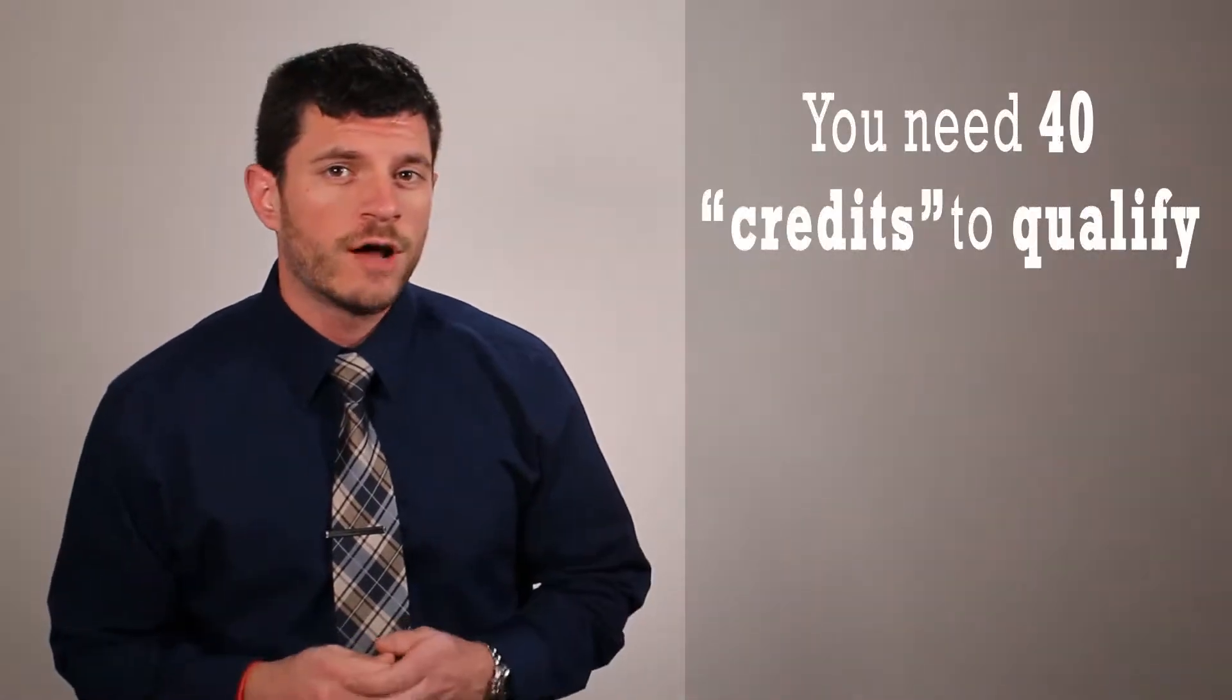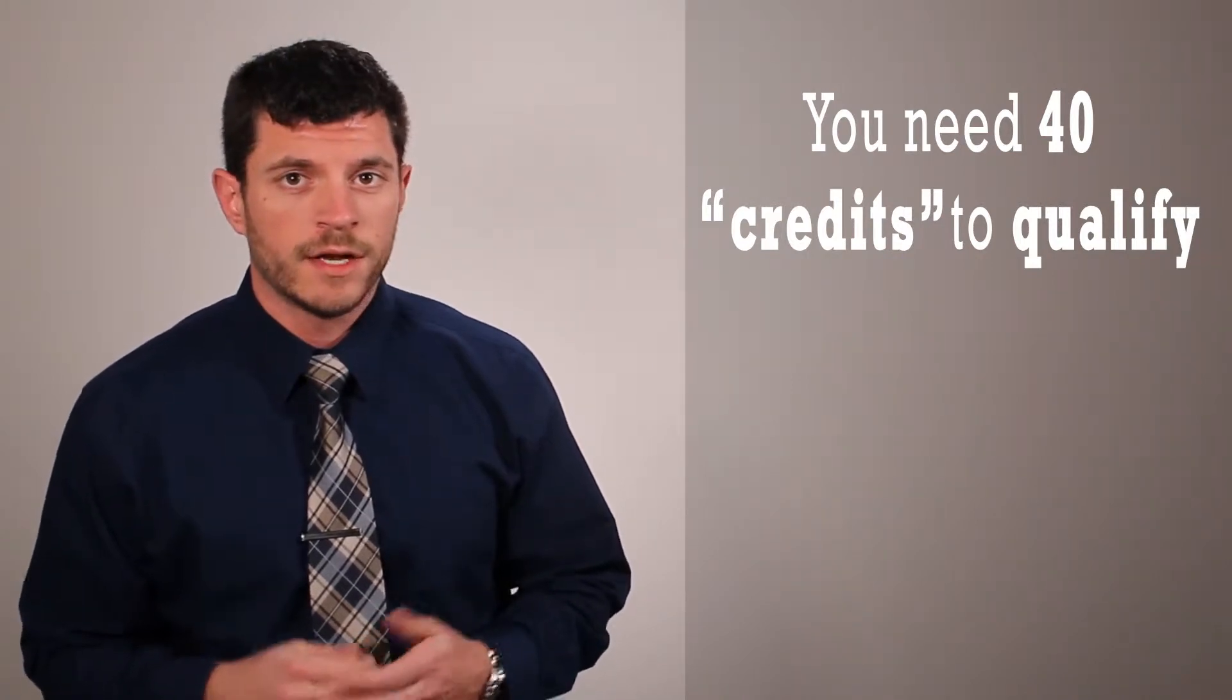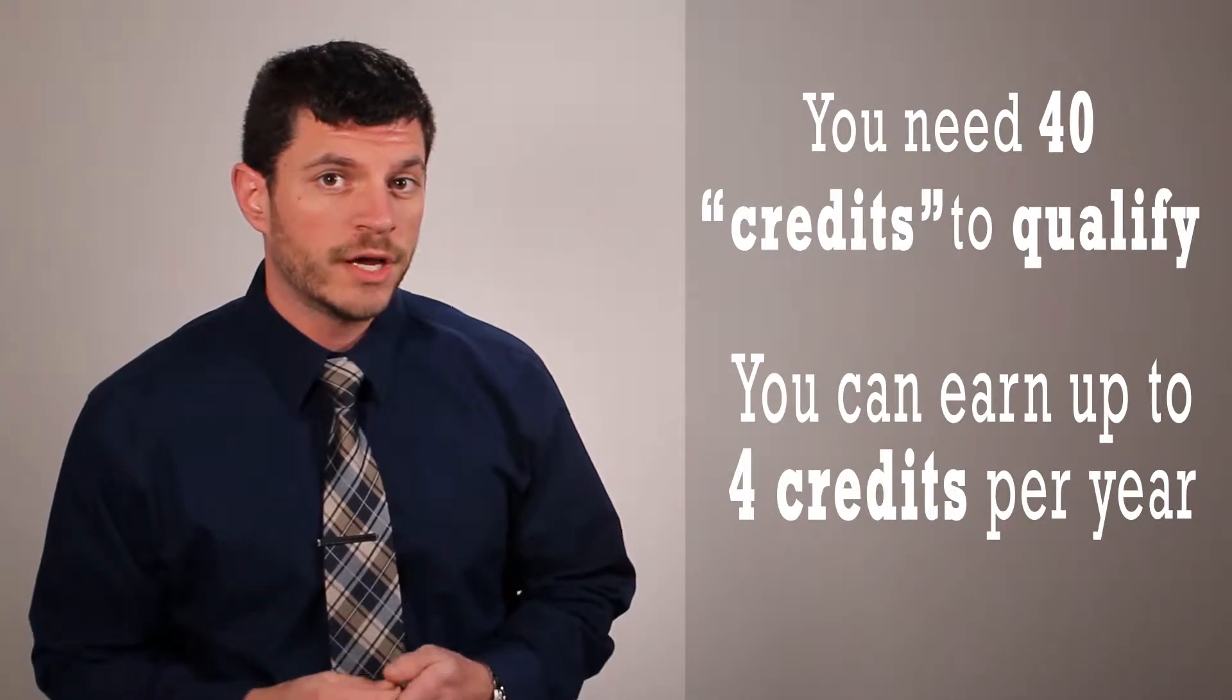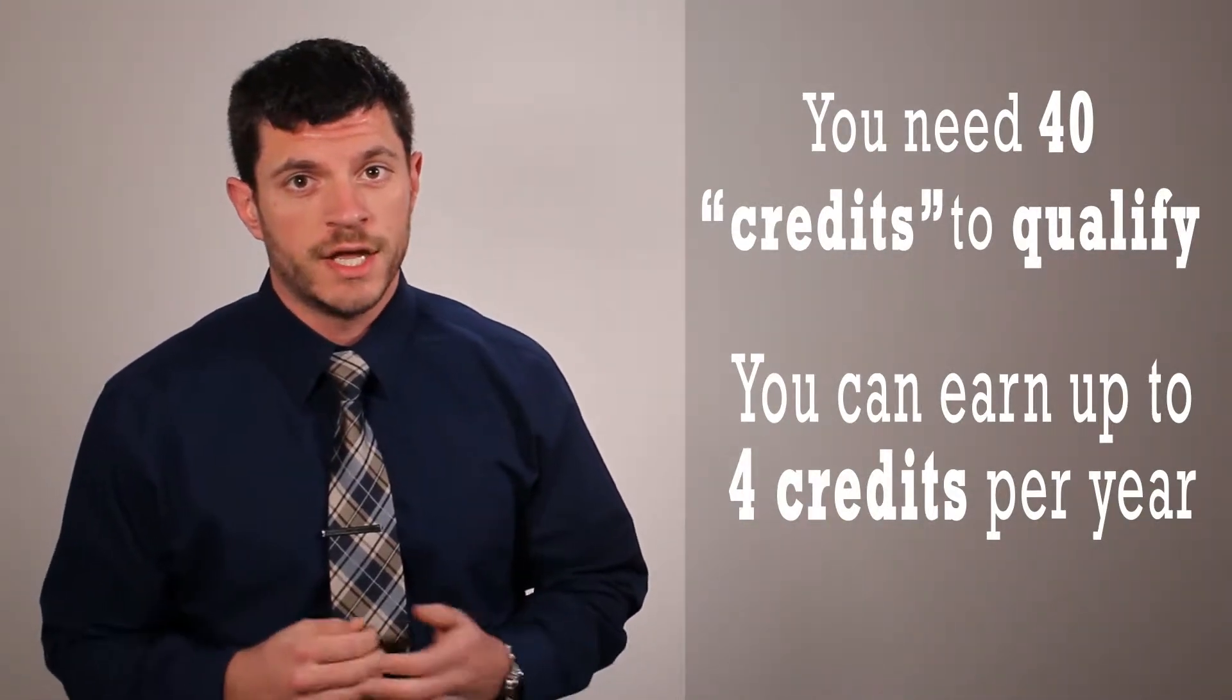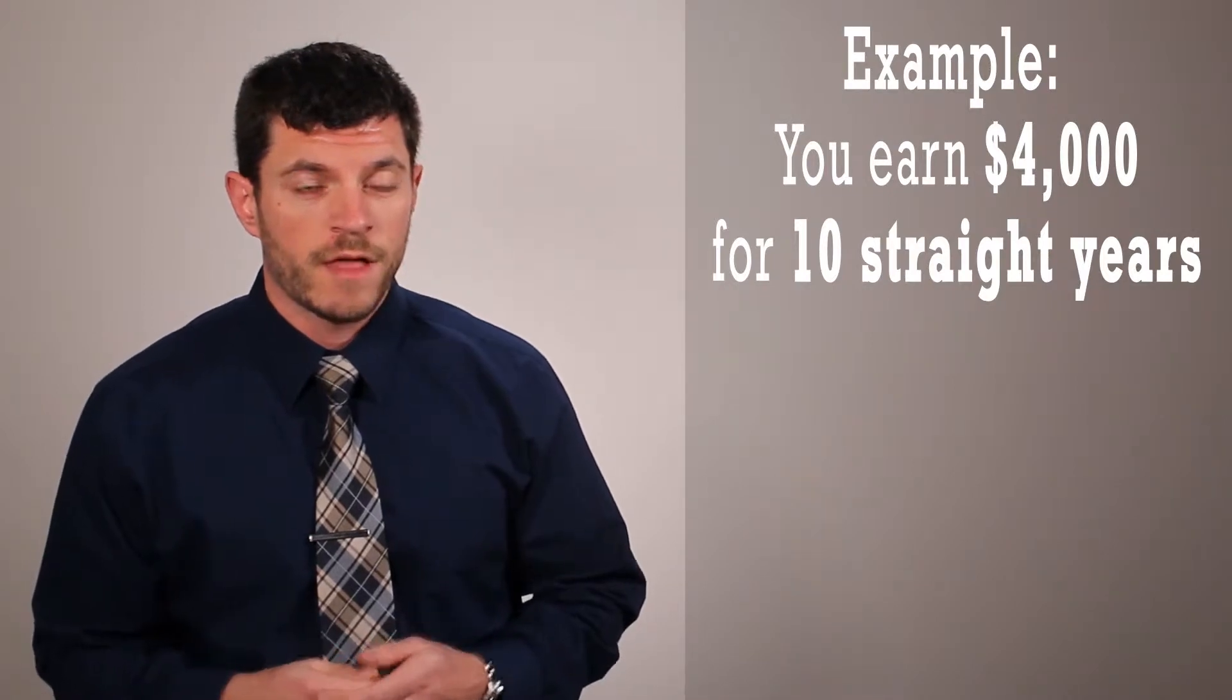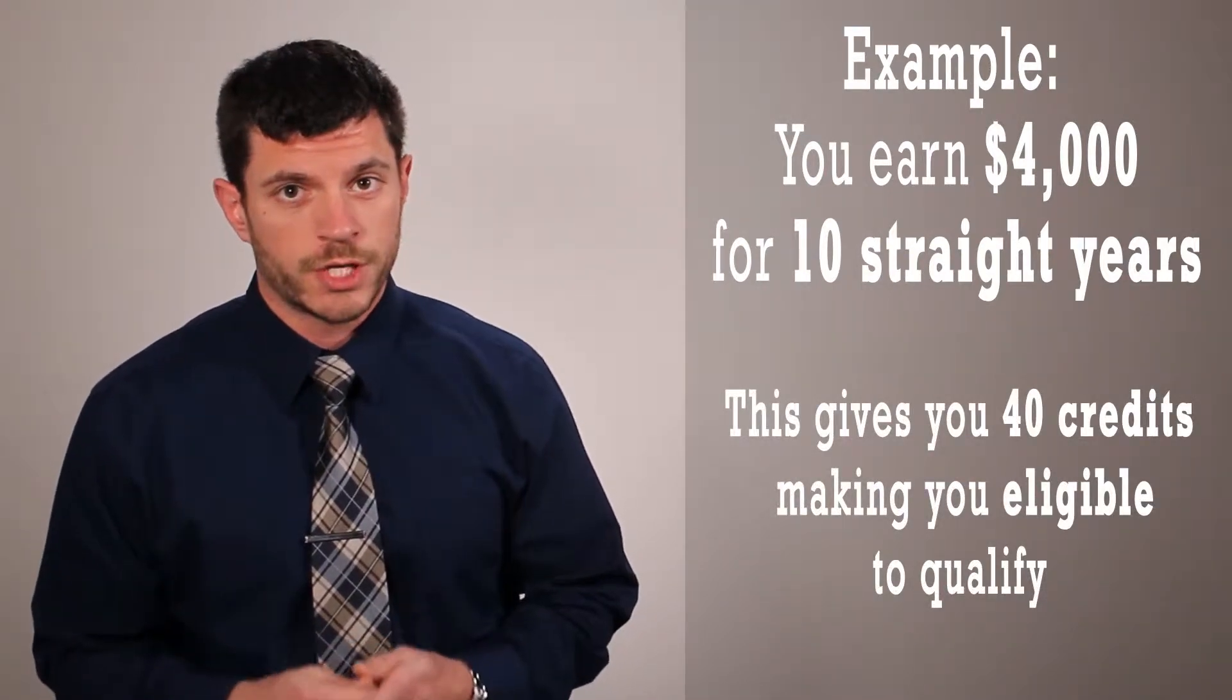So first off, you need 40 credits just to qualify for Social Security. Now the Social Security Administration will give you four credits per year and one credit equals $1,000 in income. So the example here is that if you earn $4,000 for 10 straight years, that will get you the 40 credits you need just to qualify for Social Security.